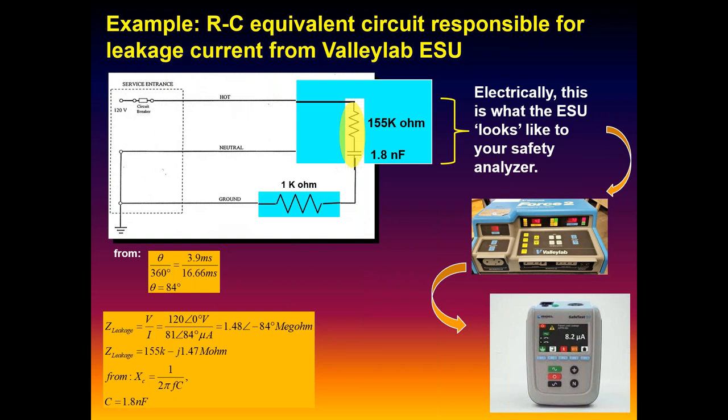How we get 81 microamps is equivalent to having a 155 kilohm resistor in series with a 1.8 nanofarad capacitor. So that is electrically the equivalent to what that Valleylab looks like for your safety analyzers. That's what we're measuring, the effective leakage, if you will, from the hot to ground through that 1 kilohm resistor. That's what it looks like. Every device you plug into an analyzer, you could look at it the same way. Magnitudes would be higher, smaller. But what you're effectively measuring is the amount of parasitic stray capacitance in play in your device. Making sense a little bit.